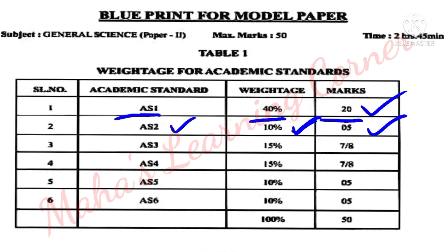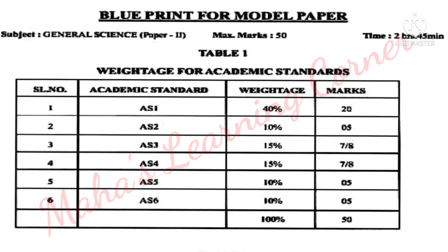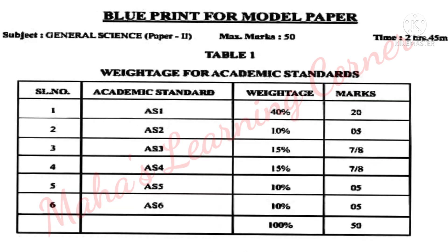AS2 is asking questions and making hypotheses, with 5 marks at 10 percent weightage. AS3 is experimentation and field investigation, carrying 7 or 8 marks at 15 percent weightage. AS4 is information skills and projects, also 7 or 8 marks at 15 percent. AS5 is communication through drawing and model making, 5 marks at 10 percent. AS6 and AS7 cover appreciation, aesthetic sense, values, application to daily life, and concern for biodiversity, together carrying 5 marks at 10 percent.